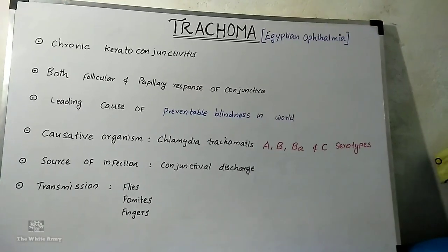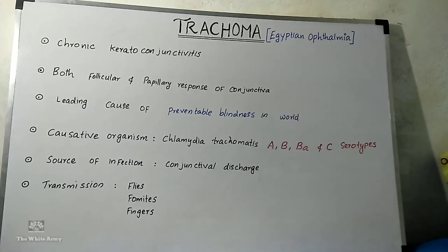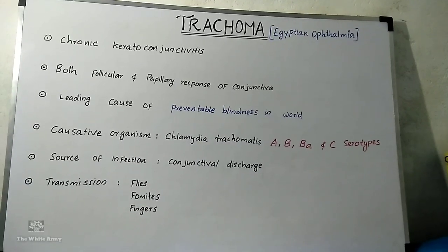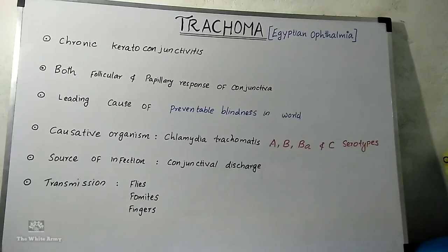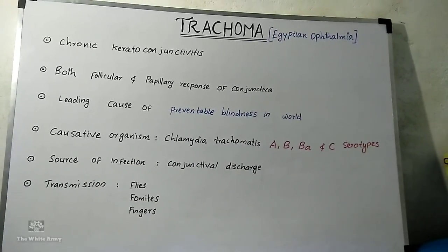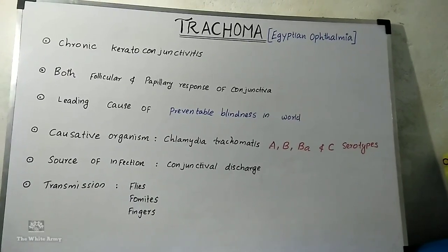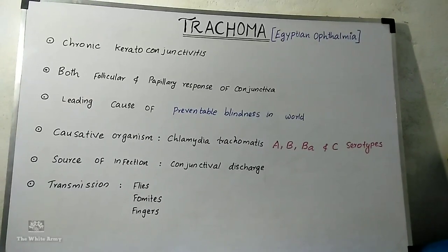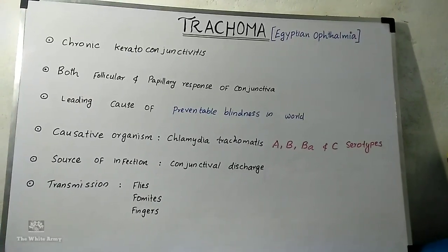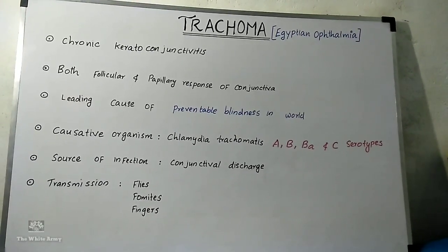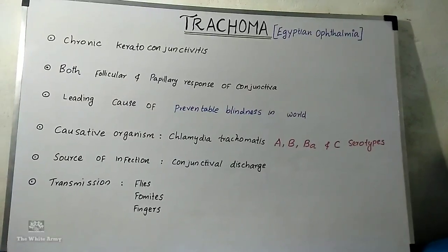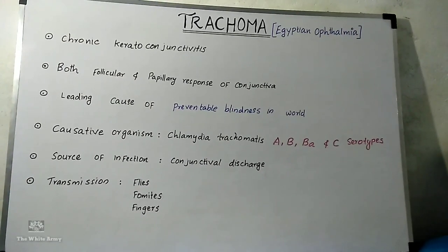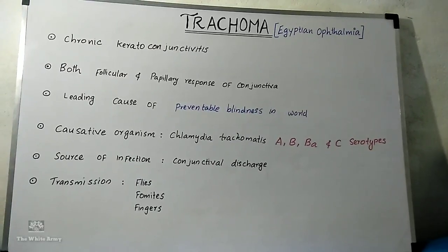The causative organism is Chlamydia trachomatis, which is a gram-negative obligate intracellular bacteria. The serotypes associated are A, B, BA and C, of which C is most commonly associated. The source of infection is conjunctival discharge of an affected person, and transmission is through flies, fomites, and fingers.